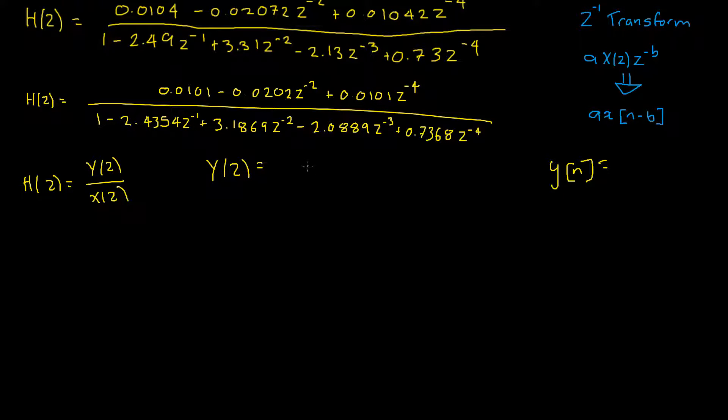And this just comes from Y of Z is equal to our input X of Z times our frequency response H of Z. Okay, and then we just simply divide both sides by X of Z and we get an equation for H of Z. So, let's replace our H of Z here with our Y of Z X of Z.